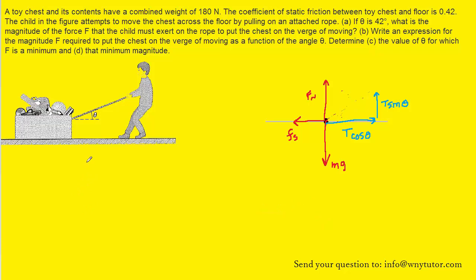We can next turn to Newton's second law in the y direction, which tells us that the sum of the forces in the y direction will equal the mass of the object multiplied by its acceleration in the y direction. The toy chest is not accelerating in the y direction, so ay would be zero, making the entire right-hand side of the equation zero.